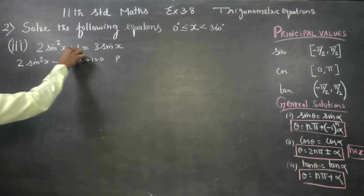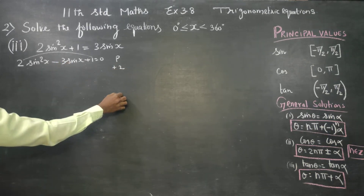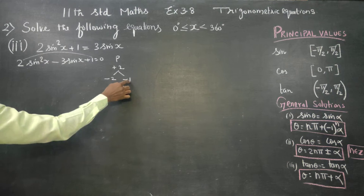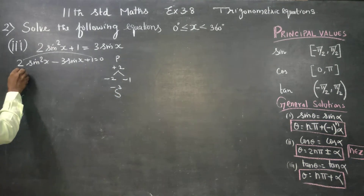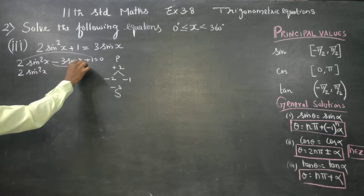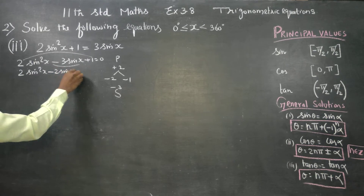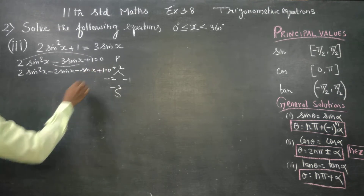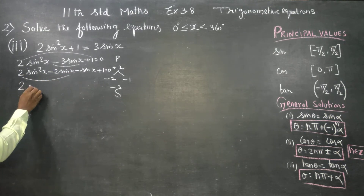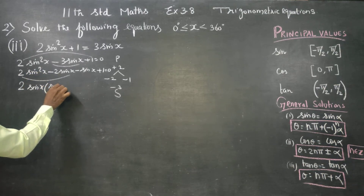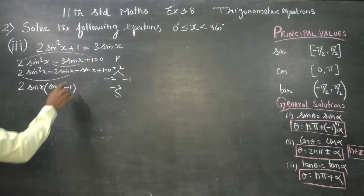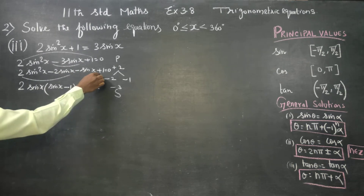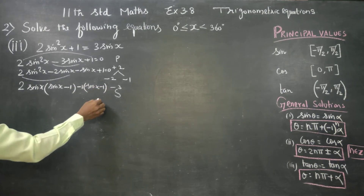I am going to try a product-sum method. Product is 2×1=2, and sum is -3. This can be written as -2 minus 1. So 2sin²x - 2sinx - sinx + 1 = 0. Taking common factor 2sinx, the balance is (sinx - 1), and -1 common gives (sinx - 1) = 0.